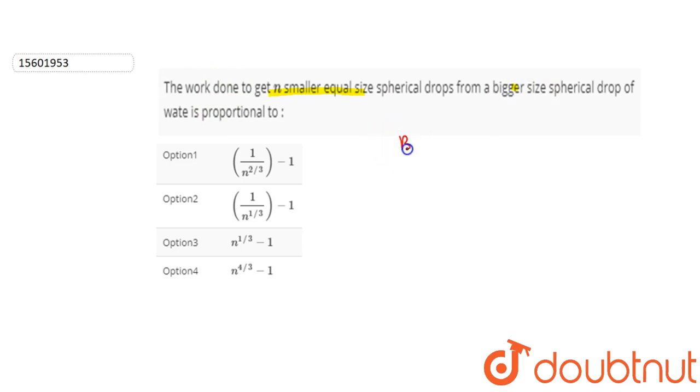Let's do the bigger drop. Okay, this is the bigger drop. The bigger drop has a radius of capital R. And we have smaller drops with radius r. The volume of the bigger drop is 4 by 3 pi R cube.